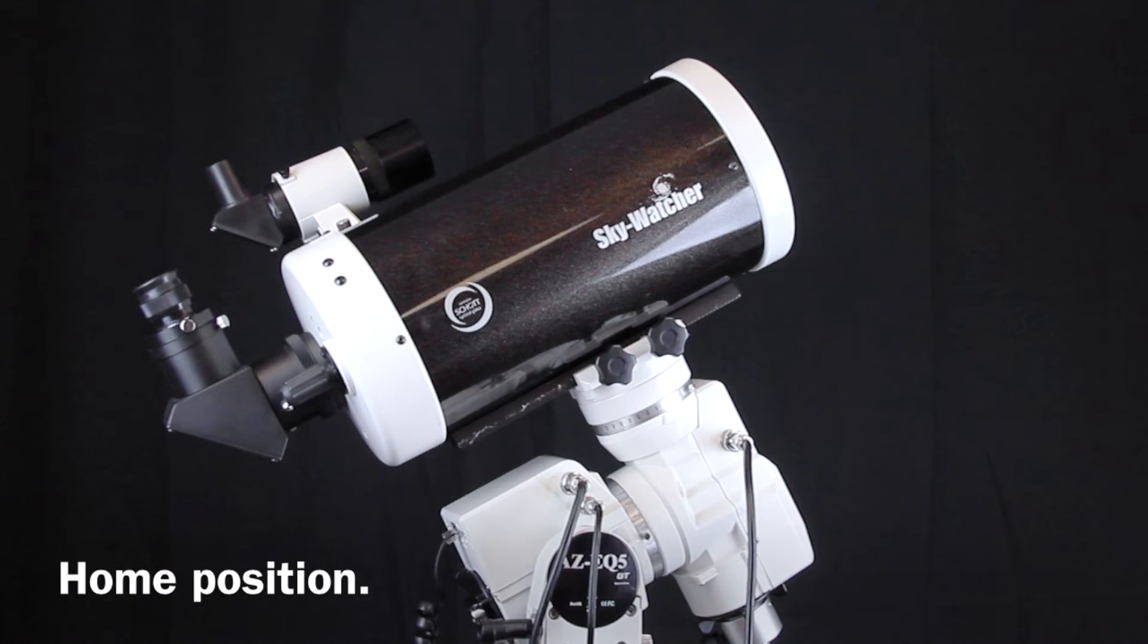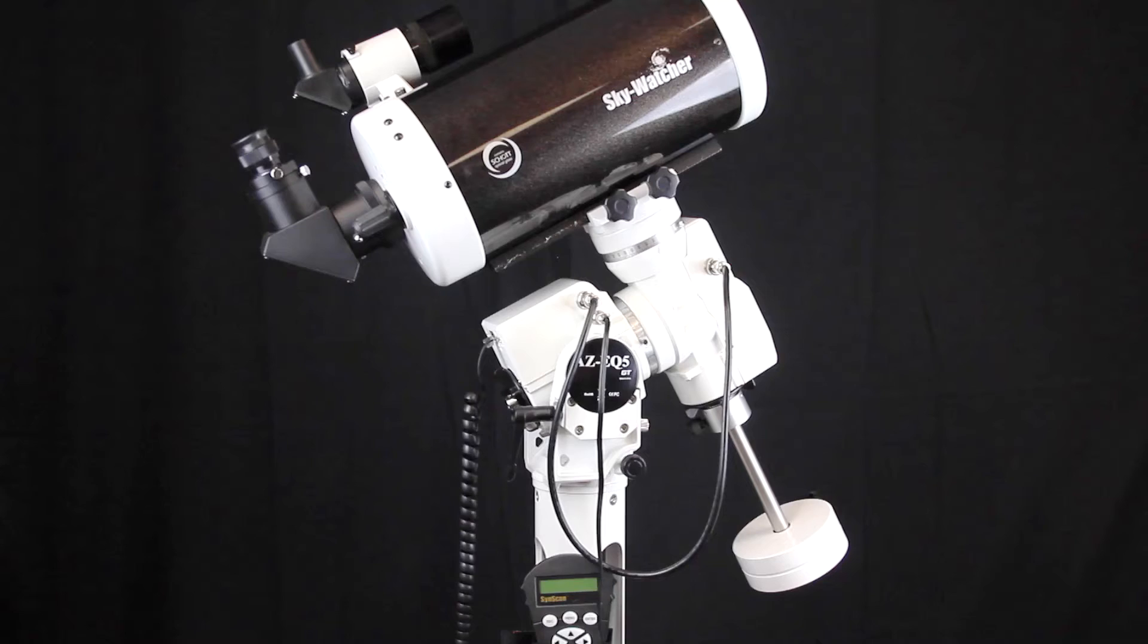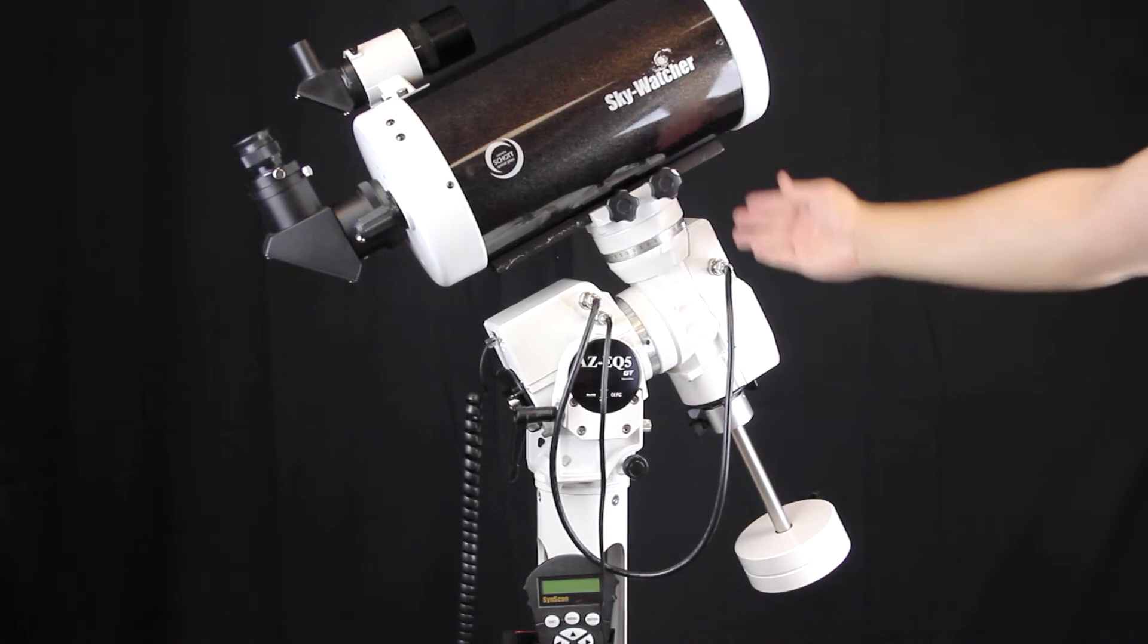Start at the home position with the right ascension axis and telescope pointing towards the north or south celestial pole depending on your hemisphere, and the counterweight rod in the lowest position.